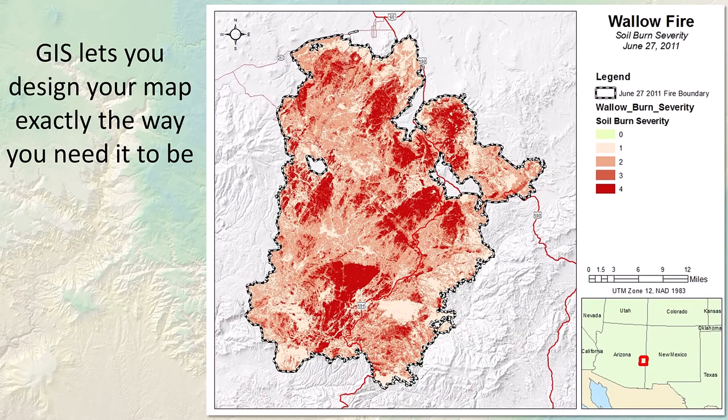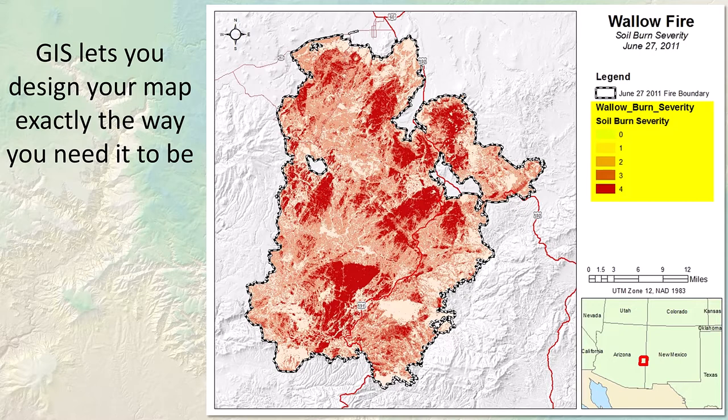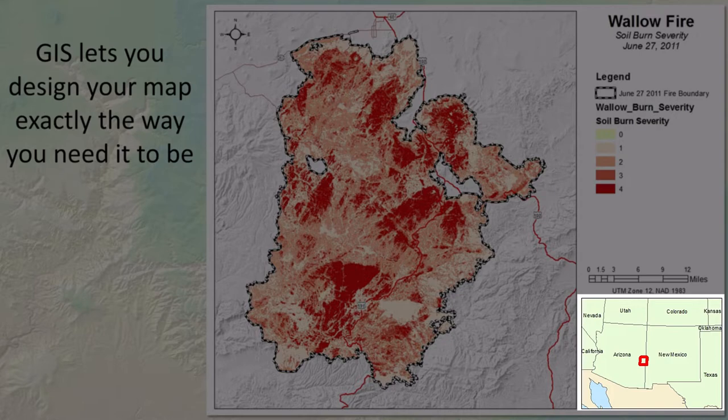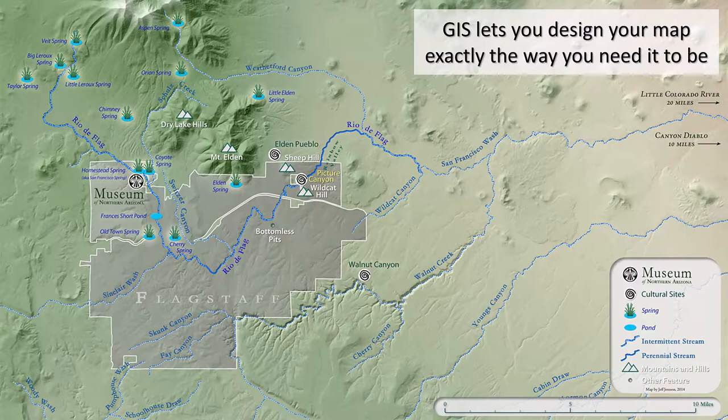GIS goes much further than a paper map — you can adjust the map to more precisely fit your needs. For example, the Wallow Fire back in 2011 was a massive fire in eastern Arizona. Maybe I want to map the burn severity across the extent of the Wallow Fire and not be distracted by extraneous lines like section lines or topo lines. Maybe I want a second map where I can see where the Wallow is on the larger landscape, showing just the Wallow boundary and a couple of state boundaries. GIS lets us design the final map to be exactly what we want.